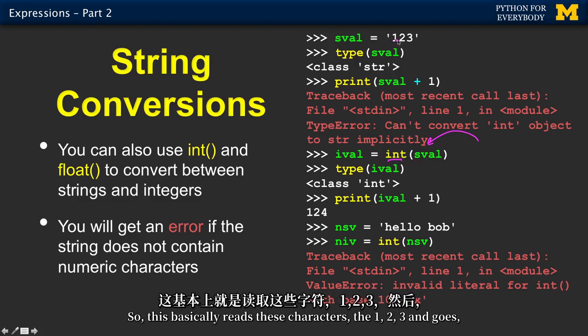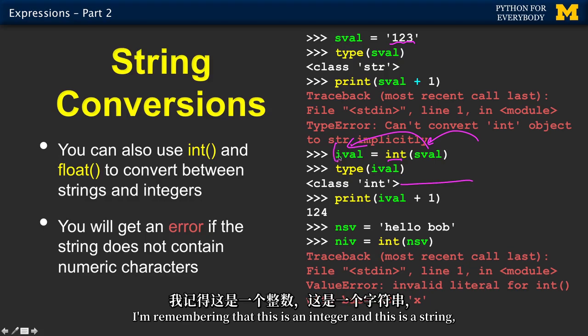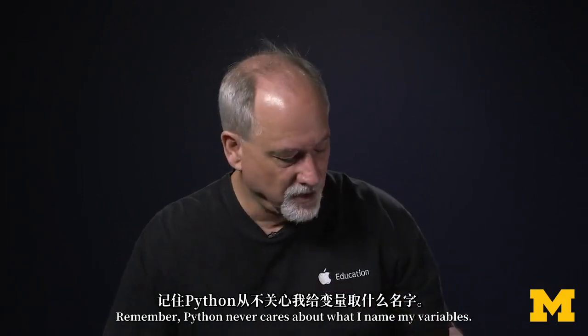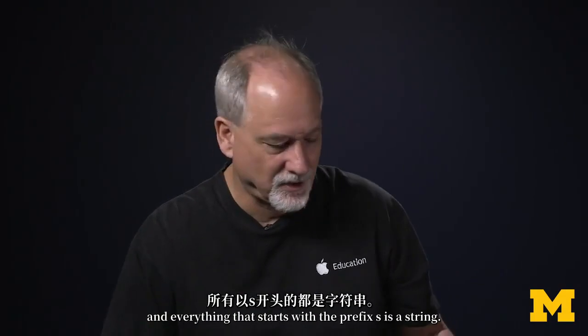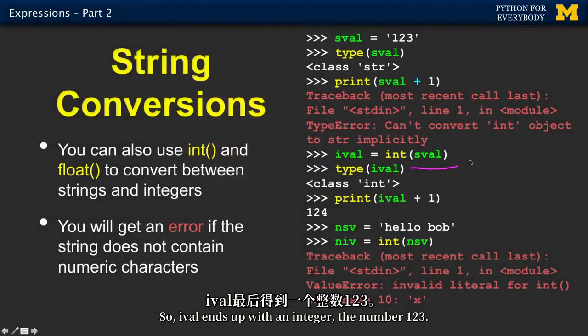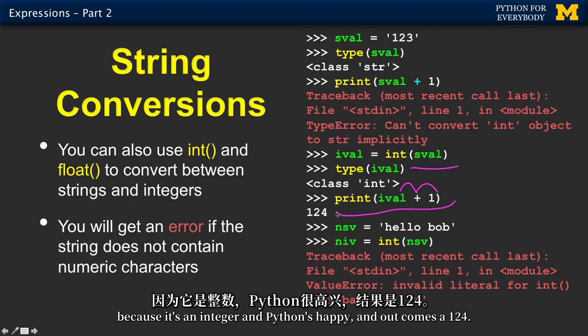So this basically reads these characters, the one, two, three, and goes, oh, that's 123, and gives us back 123. And we say, what kind of thing is in there? Well, now, in iVal, there's an int. Now, I'm being mnemonic here. I'm remembering that this is an integer and this is a string, but Python doesn't care what I name my variables. Remember, Python never cares about what I name my variables. So if I start naming them conveniently, don't all of a sudden think that everything that starts with the prefix i is an integer, and everything that starts with the prefix s is a string. It'll be a number of lectures before I stop reminding you of that. So iVal ends up with an integer, the number 123, and now we can indeed add one to it because it's an integer, and Python's happy, and out comes a 124.